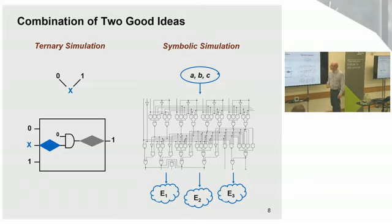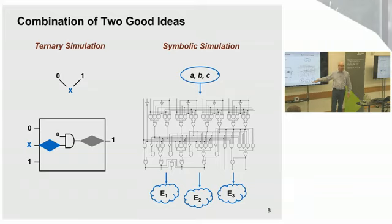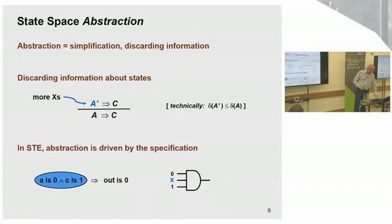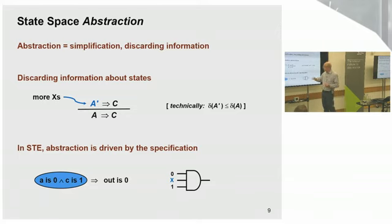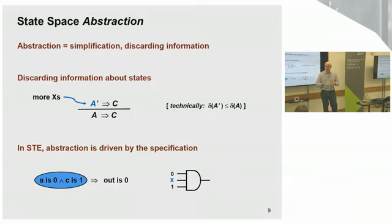The great thing about ternary simulation is you can exploit laziness in the internal circuitry. If you have an X coming in but reach an AND gate with a zero on one side, the output is determined even without knowledge of the other input. The second good idea is symbolic simulation: putting variables into the circuit, doing a forwards simulation, and producing expressions at the end — represented by AND-inverter graphs, BDDs, or formulas. Symbolic simulation plus ternary simulation was the secret sauce to symbolic trajectory evaluation. Combined, they give you a state space abstraction driven by the specification.